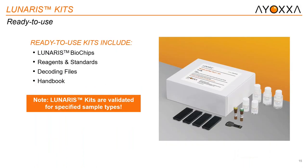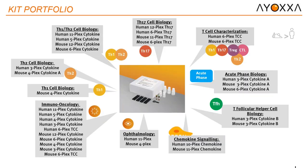Our kits are ready to use. As you see in this photo, you receive everything needed. The only supplies needed on your end would be everyday lab consumables such as centrifuge tubes, pipettes, and pipette tips. We do recommend users have access to a plate centrifuge as well as a multi-channel pipette. This is a snapshot of our kit portfolio — we currently offer over 100 analytes for both human and mouse samples, and we are designing more kits in our pipeline for a 2021 release. Please feel free to visit our website for a full list of all our kits and their corresponding analytes.